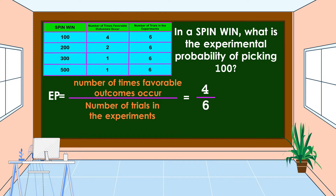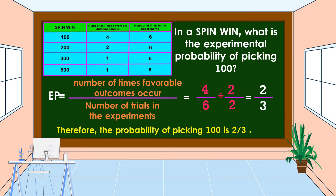Don't forget to reduce your answer to its lowest term if possible. 4 and 6 are both divisible by 2. 4 divided by 2 is equal to 2, and 6 divided by 2 is equal to 3. Therefore, the probability of picking 100 is two-thirds. Two-thirds in percent is 67 percent. 67 percent is closer to 100 percent, so the probability of picking 100 is likely to happen.